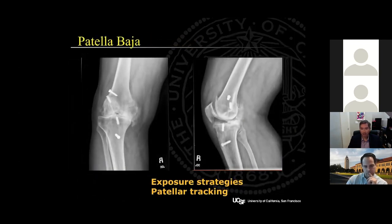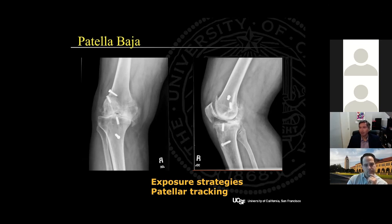Scrutinizing the lateral x-ray for patella baja, especially in cases where patients have evidence of prior BTB ACL reconstructions, HTOs, or other periarticular knee surgeries is important, as this will be a more difficult surgical exposure and may adversely affect patellar tracking. In these cases, I take my time removing the infrapatellar scar tissue right after the arthrotomy. At times, I perform my patellar resection right off the bat, and I'm very mindful not to raise the joint line, which can exacerbate the problem.